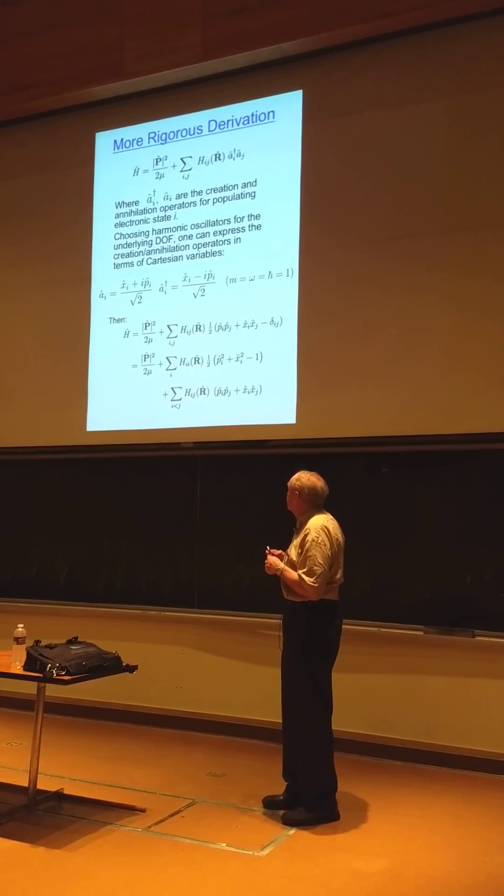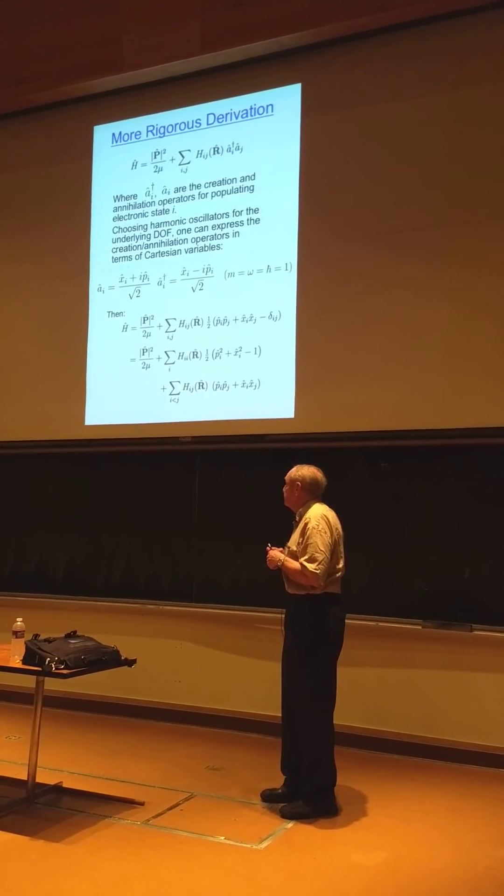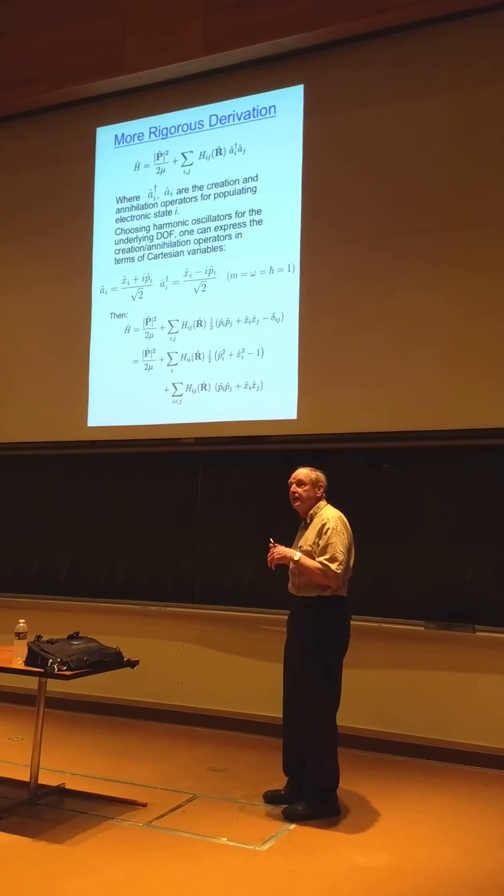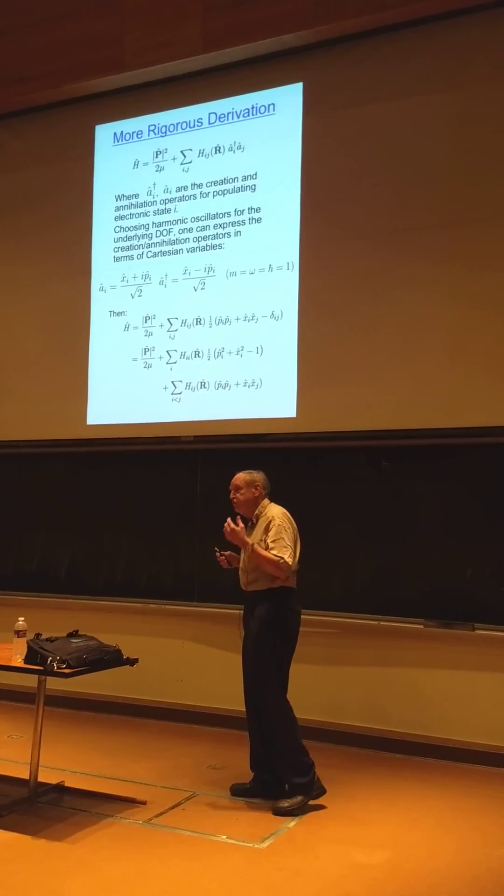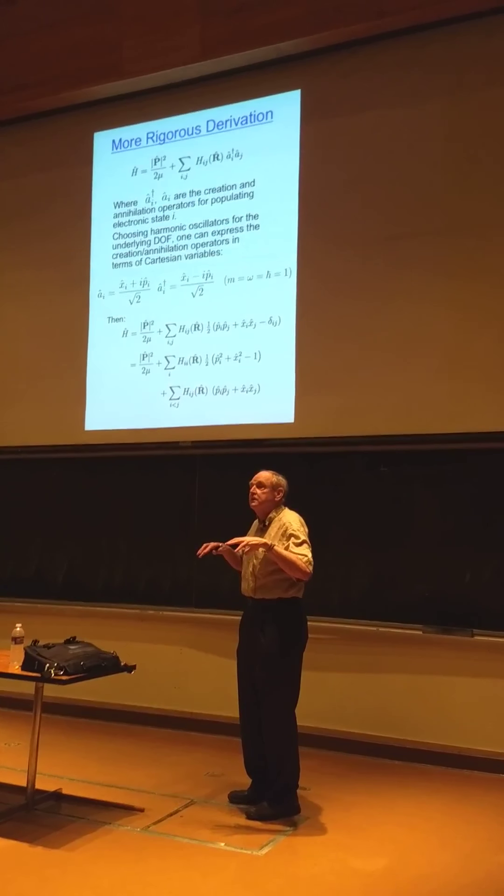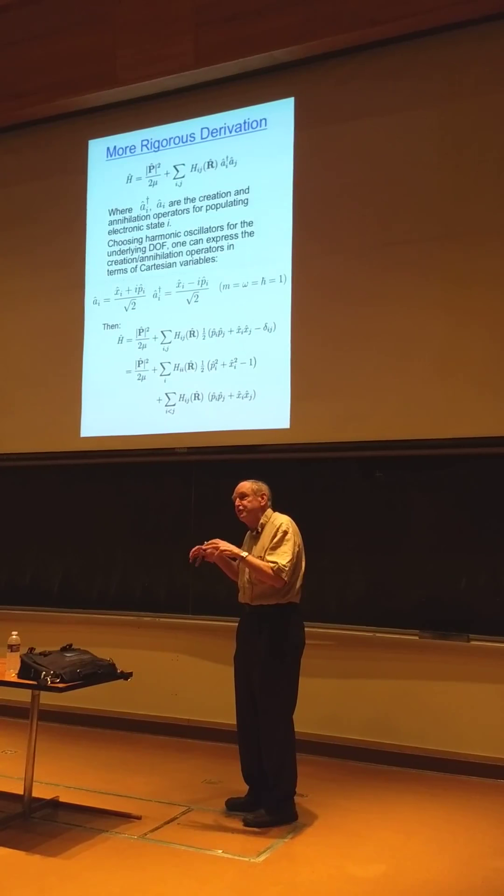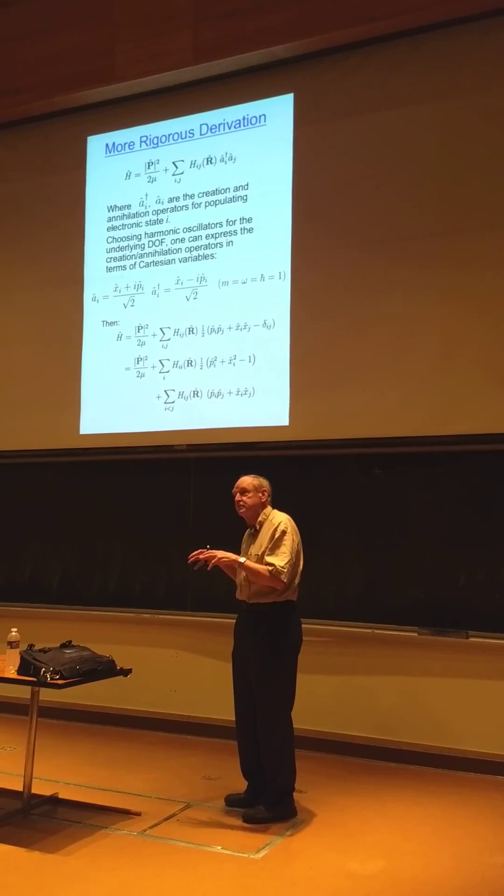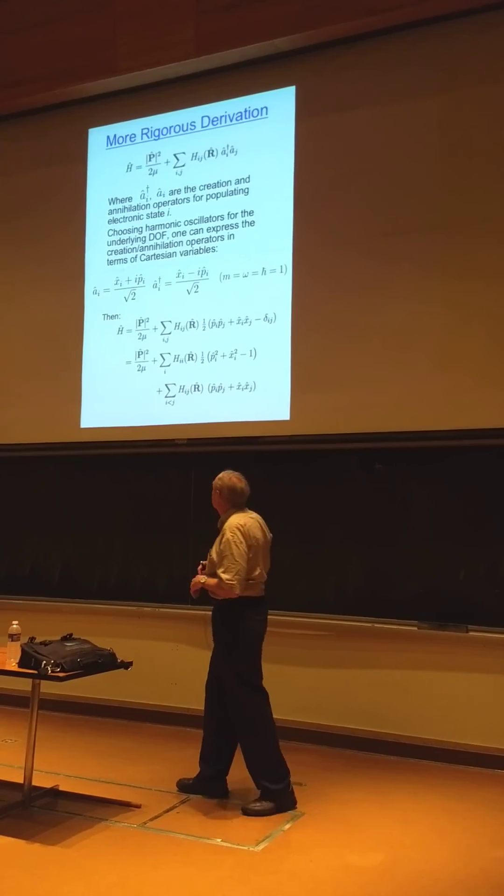The approximation, of course, is that we treat it classically, but we treat all the degrees of freedom classically. And that's clearly an approximation, but we know, historically, a lot of tricky ways to use classically, even just classical calculations to mimic various quantum phenomena.